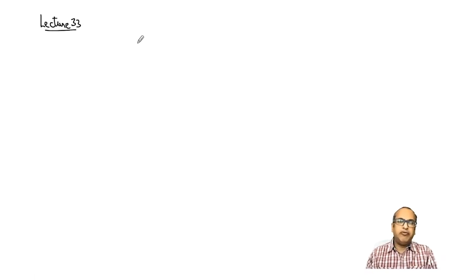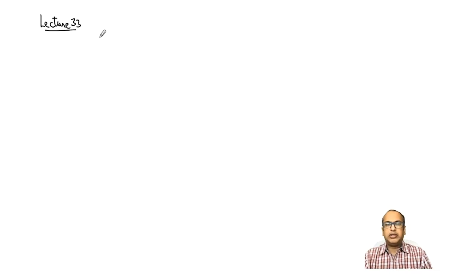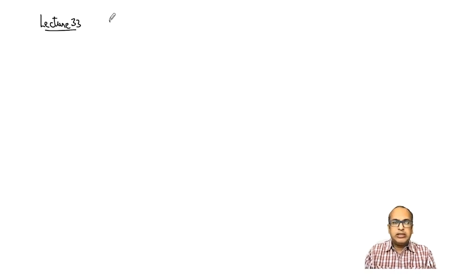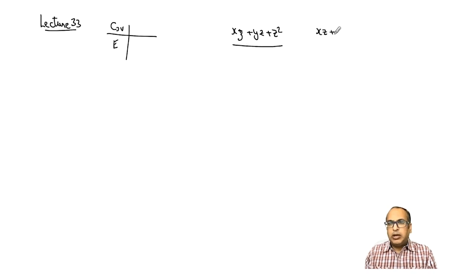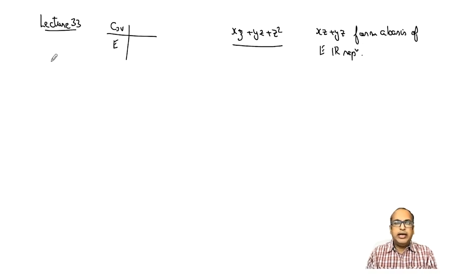In the previous lecture, we saw that we can use the projection operator to project a part of a function, which could be a random function with any given symmetry. For example, we considered the case of the c3v point group, and we projected a function with E representation. We took a function xz plus yz plus z-squared, and used the projection operator to project part of this function onto E, so that the part xz plus yz forms a basis of the E irreducible representation.